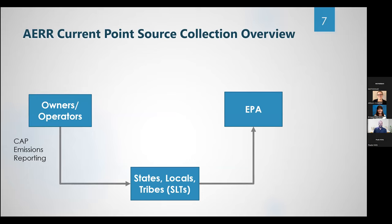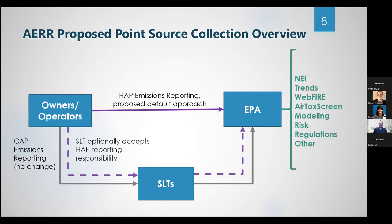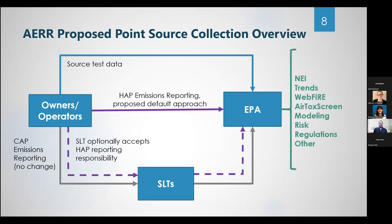To recap the bigger picture: under the current AERR, owners and operators report criteria pollutant and precursor emissions to states, locals, and tribes, who then report to EPA, with optional HAP reporting under the current collection. Under the proposed collection, criteria pollutants continue to flow from owners and operators to states and then to EPA, but the proposed requirement is for owners and operators to report HAP emissions directly to EPA. States still have the optional ability to do that reporting. In addition, the proposal includes reporting source test data electronically to EPA directly from owners and operators.